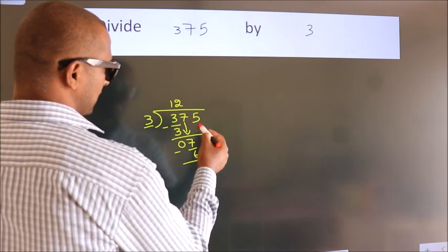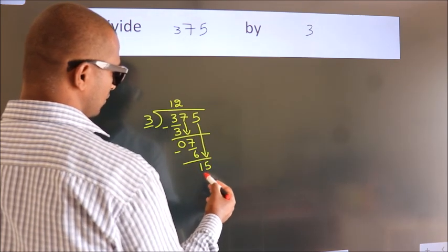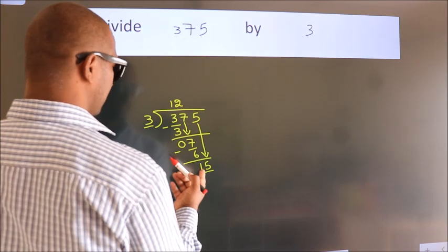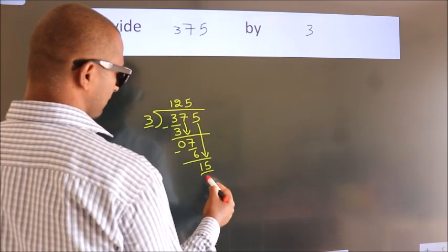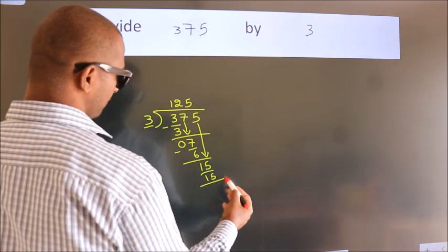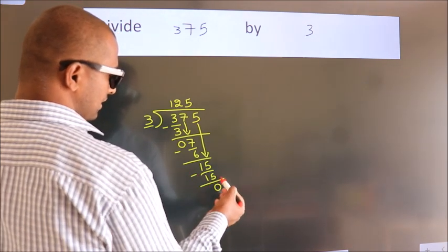After this, bring down the beside number. So, 5 down. So, 15. When do we get 15? In 3 table. 3 5s, 15. Now, we subtract. We get 0.